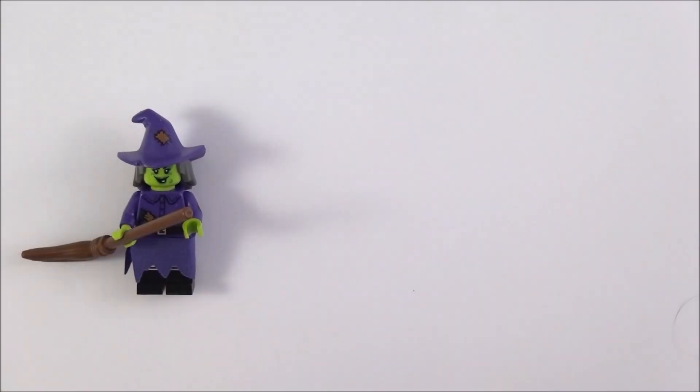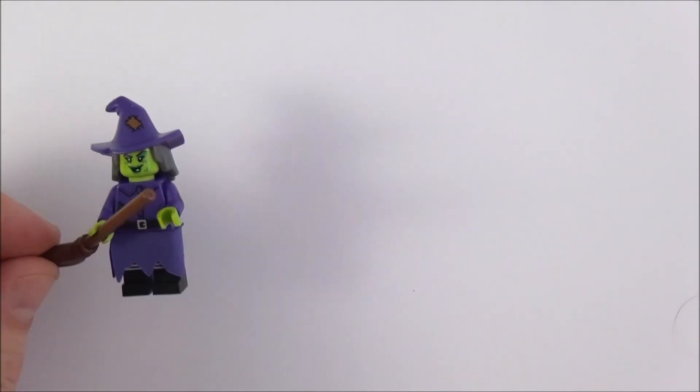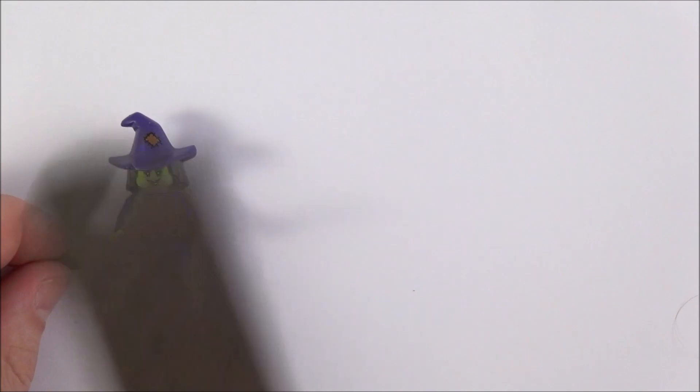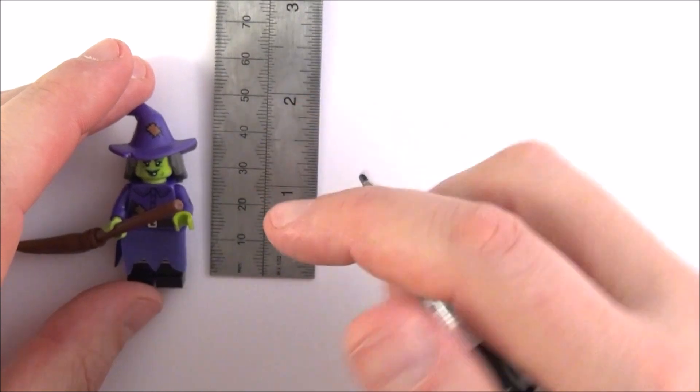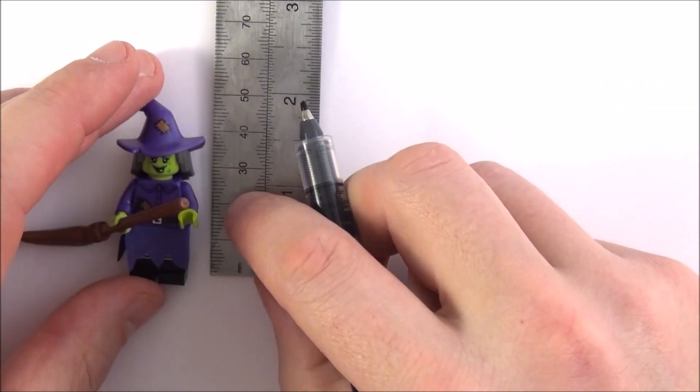Here I have my witch and what I'd really like to do is see how tall she is. So the thing I'm going to use to measure the height of this witch is my ruler. Now this one here measures to the nearest millimeter, so that's what the scale on this left hand side is.